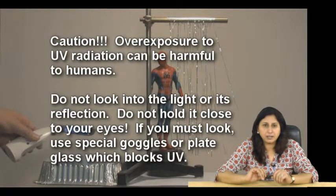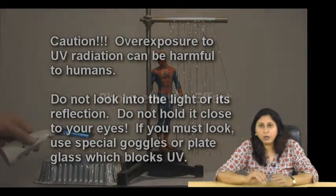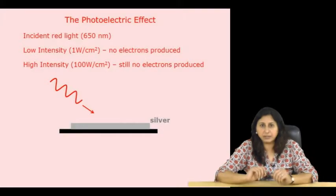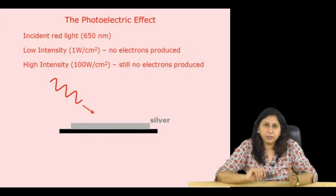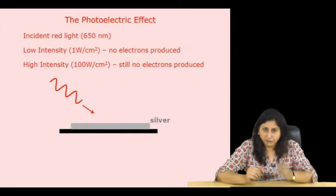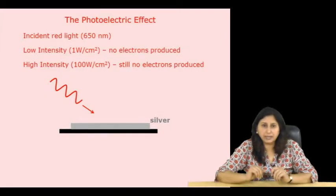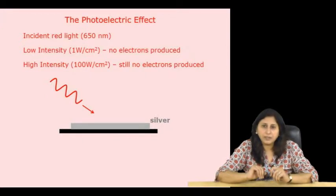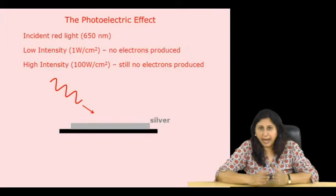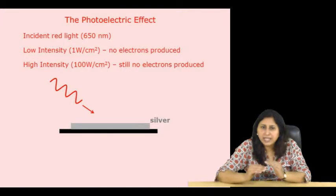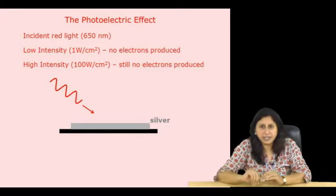Photoelectric effect. Now, let us find out how light of different frequencies behave with metal, silver here. We are doing this experiment in vacuum as we are looking for electrons that jump out of the metal. So, first we start with red light. Let us say 650 nanometres. We shine this red light on silver and we get no electrons produced. We can do this at low intensity or at high intensity and still we do not get any electrons.